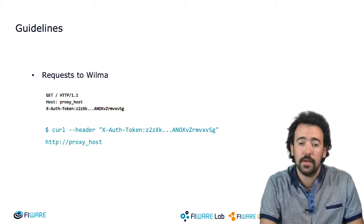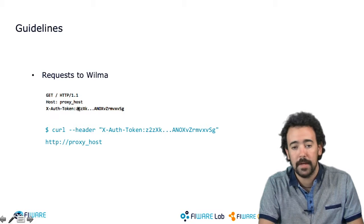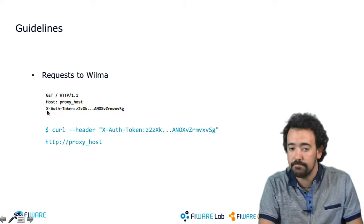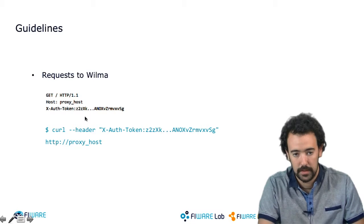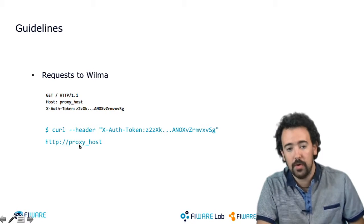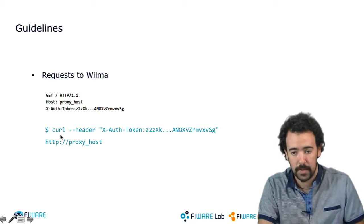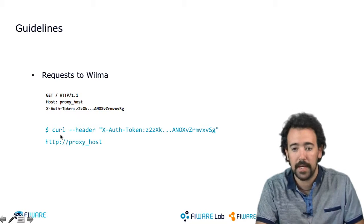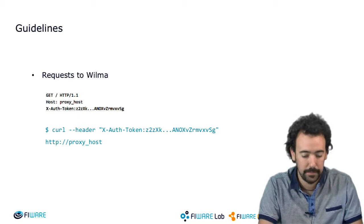To send a request to PEP proxy — to Wilma — you have to include only this HTTP header in the request, including the token. In the demo I will use CURL commands in my terminal to do it in an easy way.